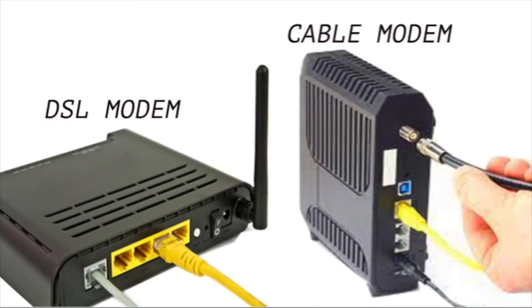Here we have a DSL modem on the left and a cable modem on the right. The DSL modem is connected to the internet using the gray RJ11 connector, which is basically just a regular telephone connection cable. The cable modem is connected to the internet using the coaxial cable. Both modems broadcast a Wi-Fi signal to the local area network and are equipped with Ethernet cable connections for their wired local area network. So physically these modems are almost identical, however their transmission bandwidth and speed capabilities are vastly different.